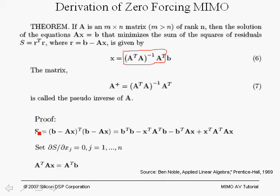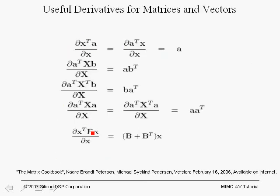We form the matrix S equal to R-transpose times R, where R equals B minus AX. So we take (B minus AX)-transpose times (B minus AX), the term we're trying to minimize. Taking the transpose in and multiplying through gives the expanded expression. We then take the derivative of S with respect to vector X and set it equal to zero, obtaining: A-transpose AX equals A-transpose B.